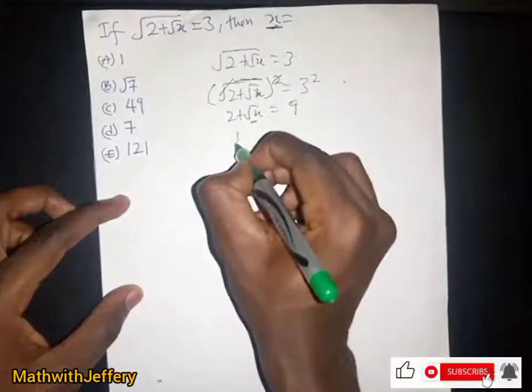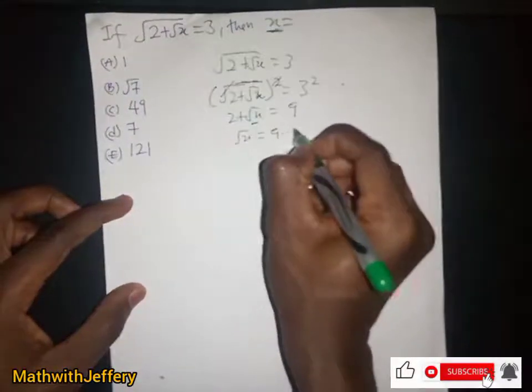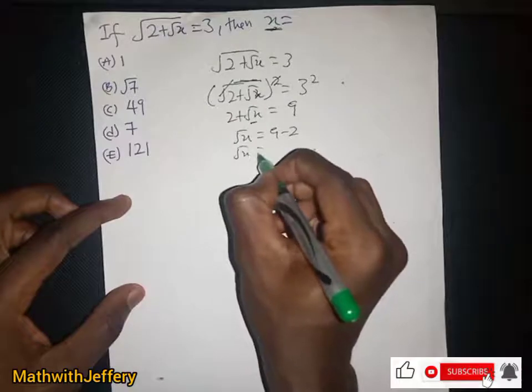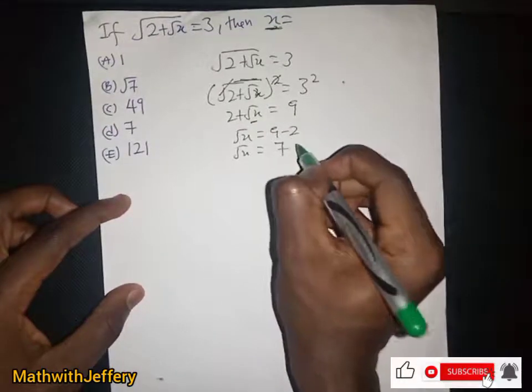Then since we are looking for x, then we group like terms here. Then we have root x here being equal to 7.